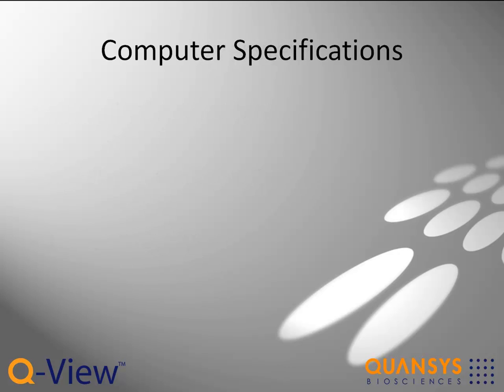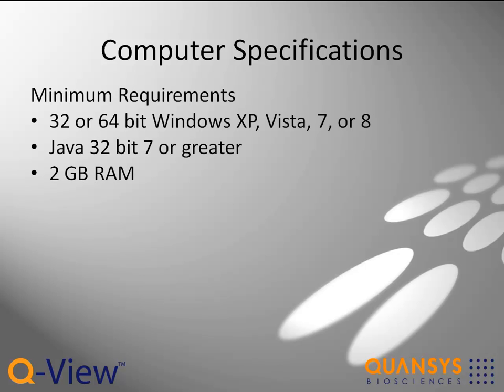Before you install the QView software, please be sure that you are working on a PC with the following minimum specifications. The operating system must be Windows XP, Vista, Windows 7 or 8, and can be either 32 or 64-bit.